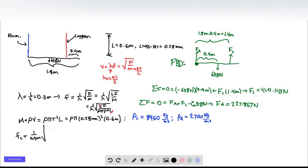So that's going to be, for copper, we use the force of the copper, 410.143 newtons, divided by rho, which is 8,960 kilograms per meter cubed times pi times 0.28 times 10 to the minus 3 meters squared. Take the square root of all that, and what you get is 1,437.9 hertz.